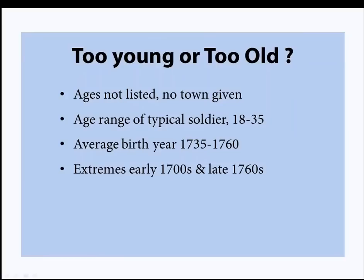Step one: determine if he fought. Too young or too old? Unfortunately, ages are not typically listed in muster rolls — sometimes the town isn't even given. If you have a John Smith in your community, was it the father, the son, or the grandson? If you find an age or a town, these are called descriptive rolls — often later in the war — and they may give physical characteristics such as height, hair and eye color, occupation, and sometimes birthplace. The average age range is about 18 to 35, with birth years typically between 1735 and 1760, though extremes range from the first decade of the 1700s to men born in the late 1760s.